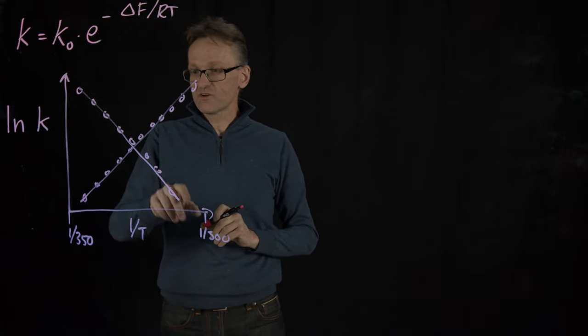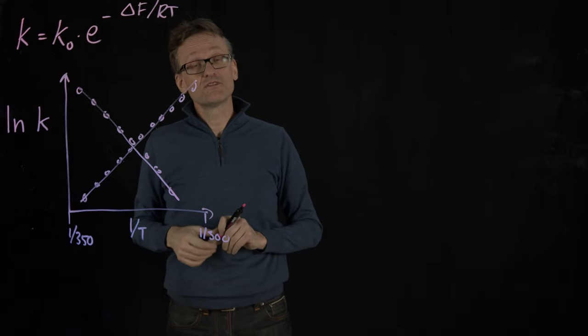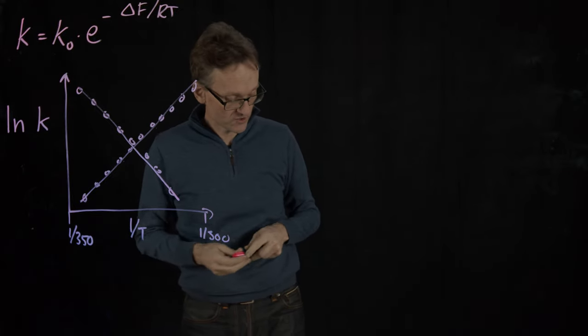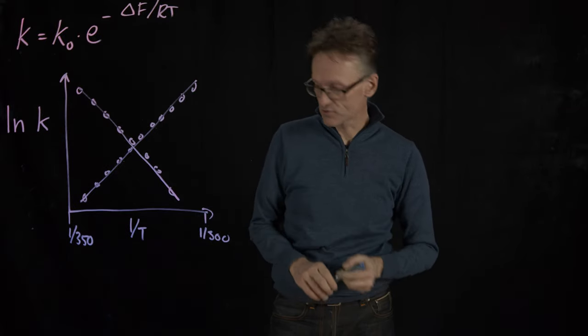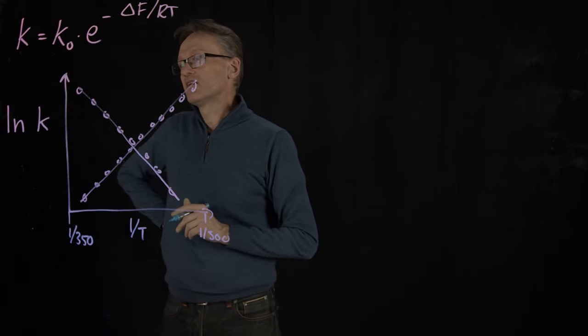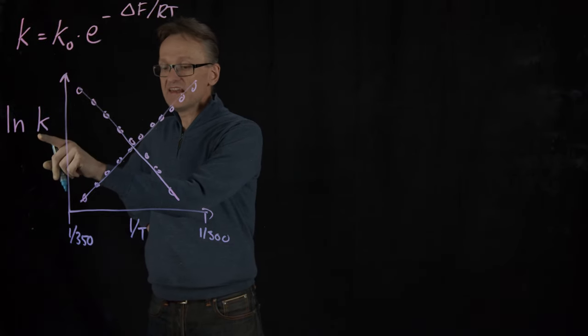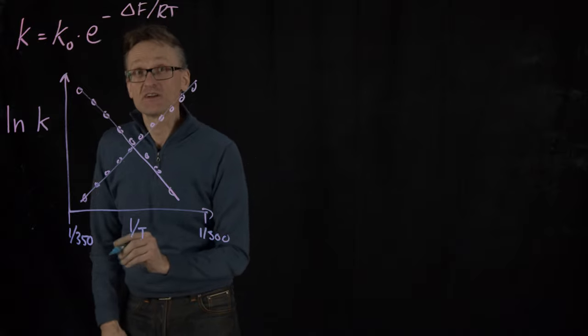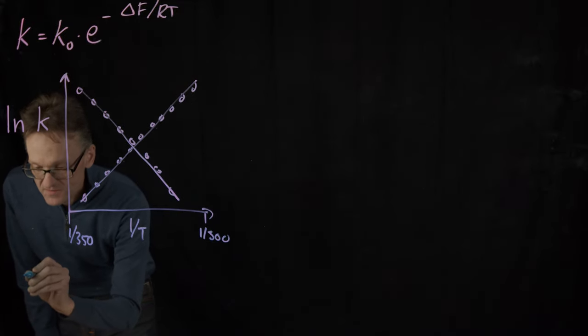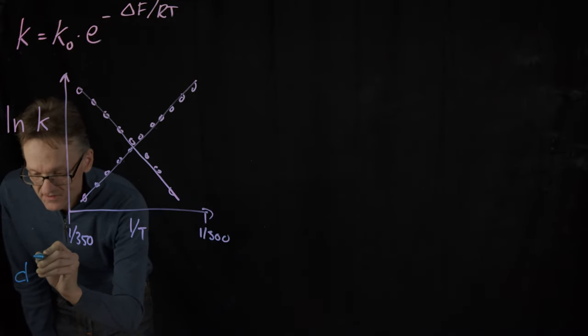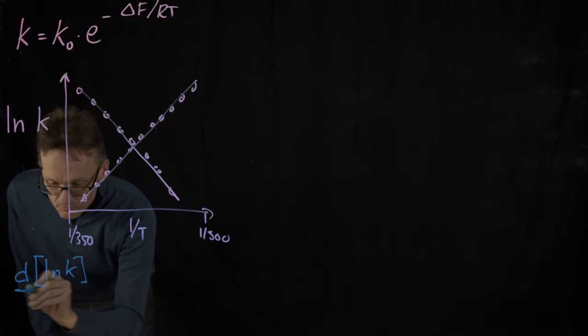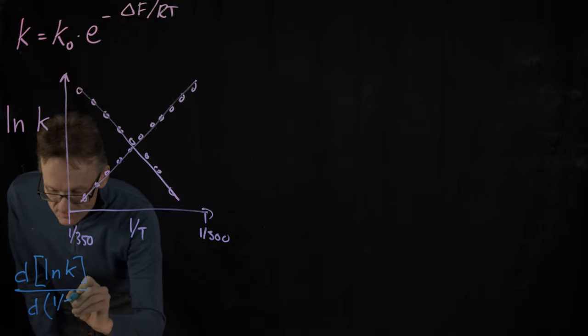But given how beautifully linear these are, we would like to know what the derivative here is. Well, we can calculate that. It's not that hard. So let's see what we can do. We have ln k versus 1 over T. So I want to calculate the derivative of ln k with respect to 1 over T.